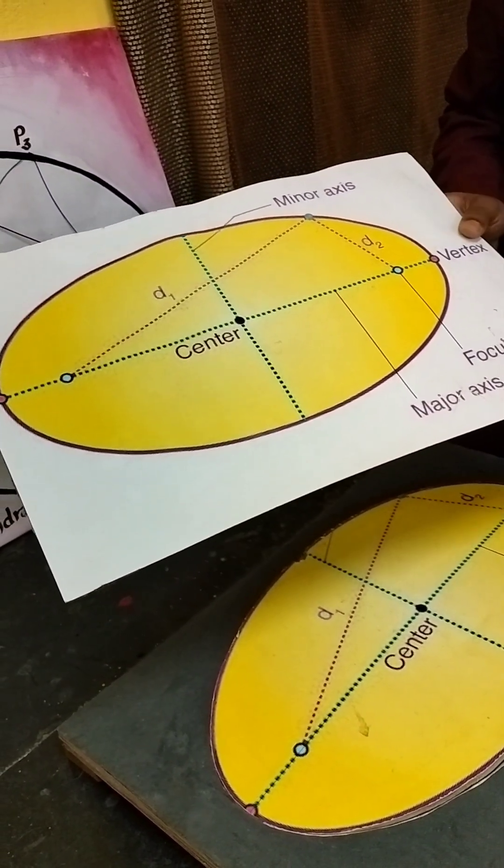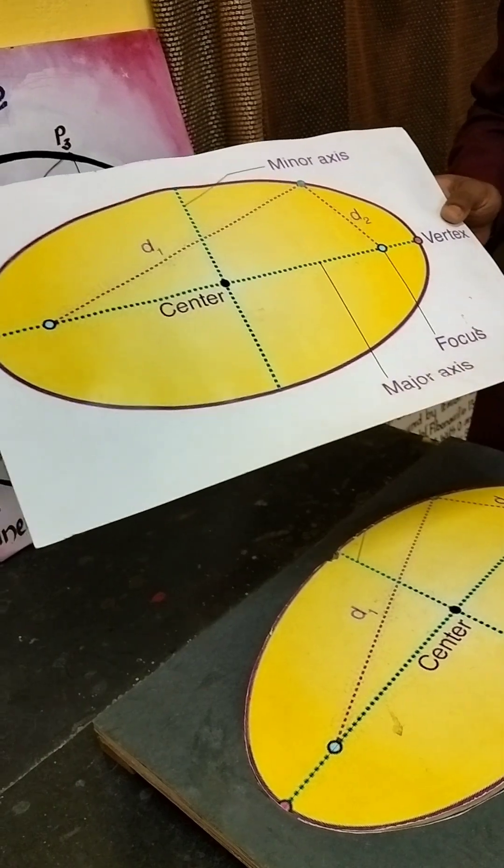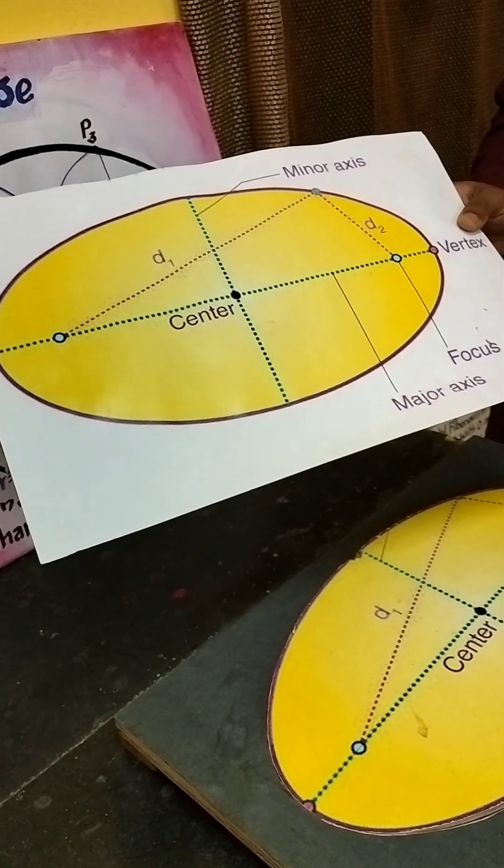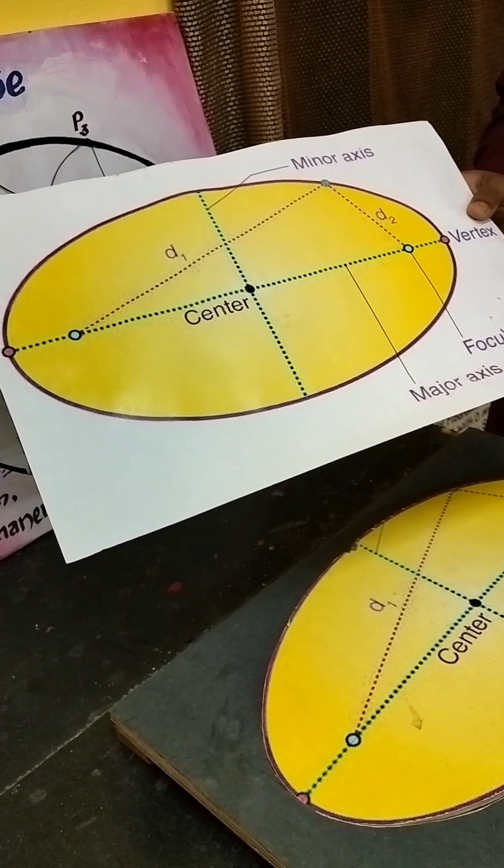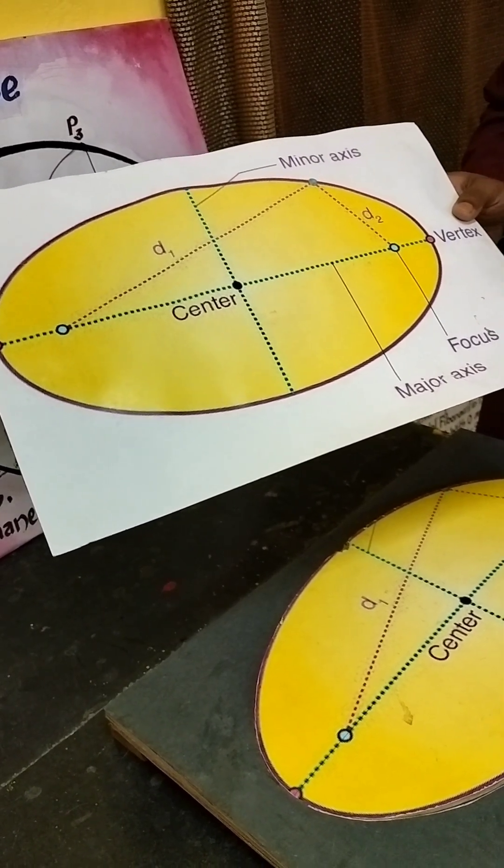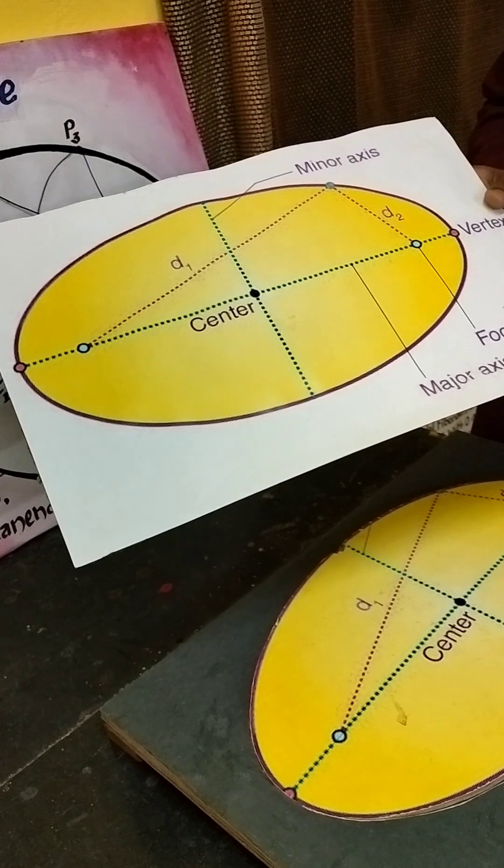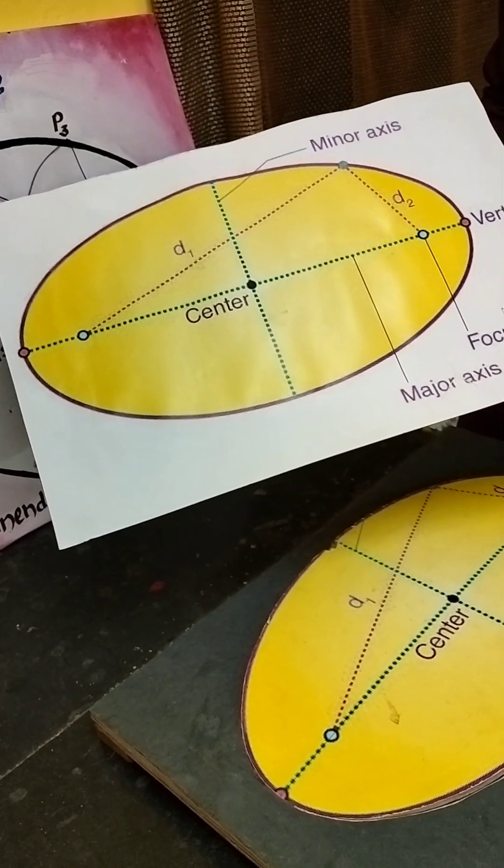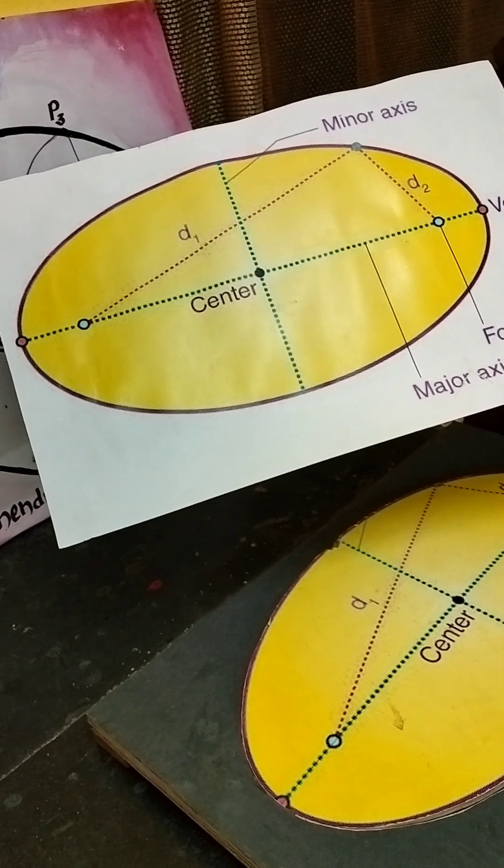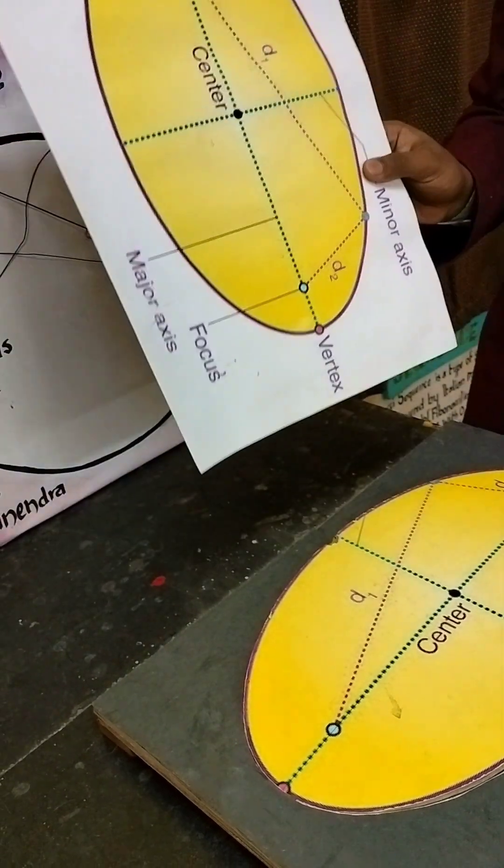The general equation of an ellipse is X²/A² + Y²/B² = 1. When A is greater than B, the ellipse looks like this and the major axis is the X-axis. But when B is greater than A, the major axis is the Y-axis and the ellipse looks like this in the graph.